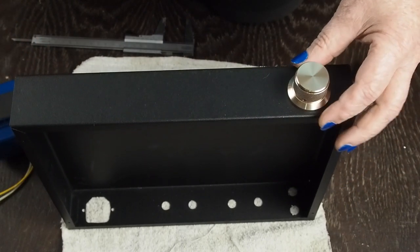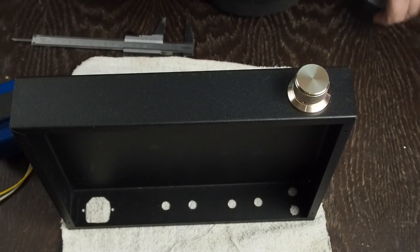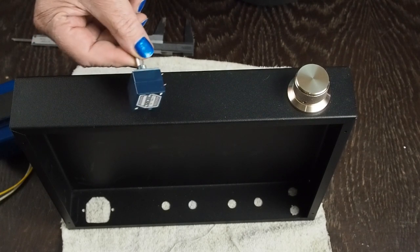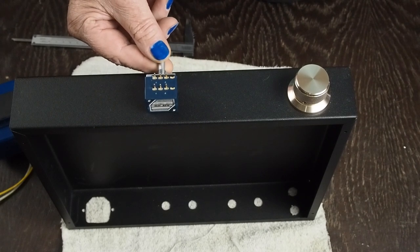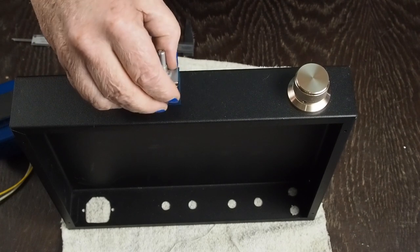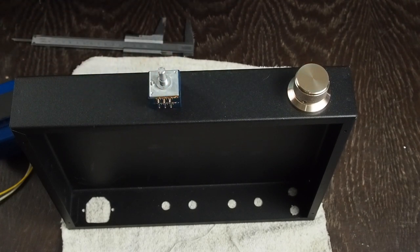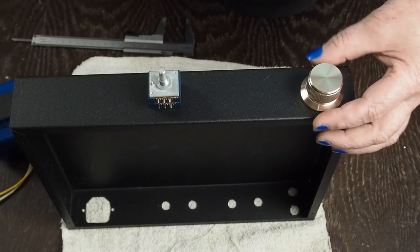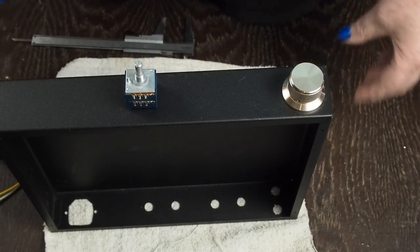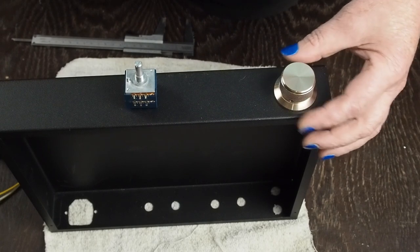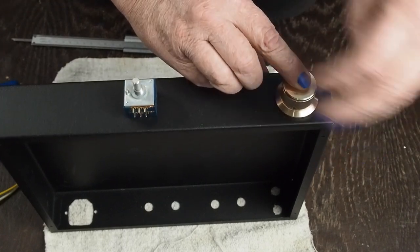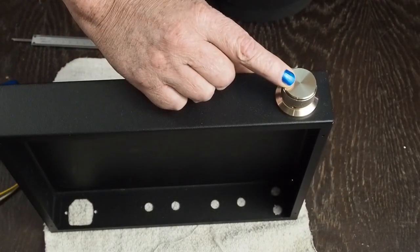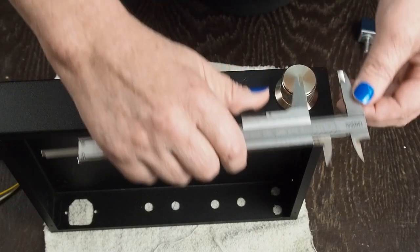In my previous amp I had the volume knob mounted more in this area, but I used a smaller audio note potentiometer. This time we're using the common Alps volume pots that are nice quality but a little beefier. They take up more room and I'm concerned about it getting into the driver tube sockets. So I'm going to move this over to about right there. I think that symmetrically still looks nice without crowding the driver tube too much.